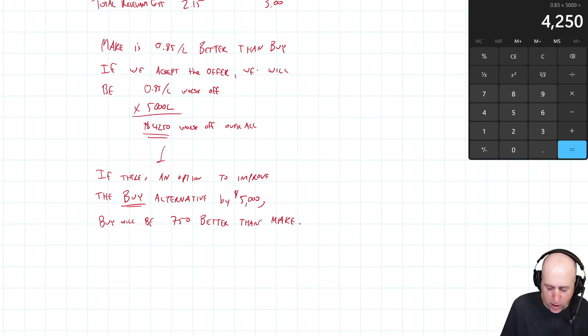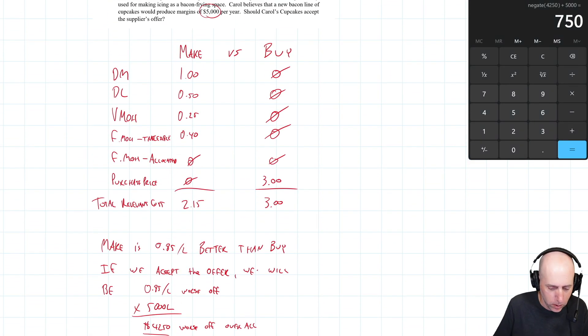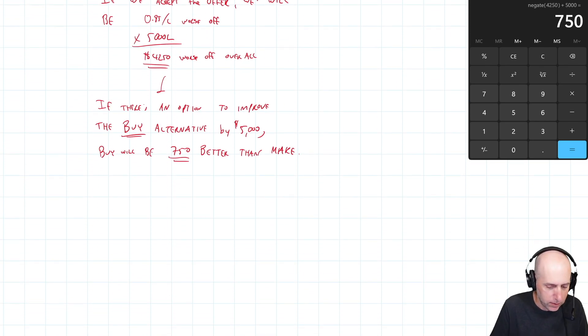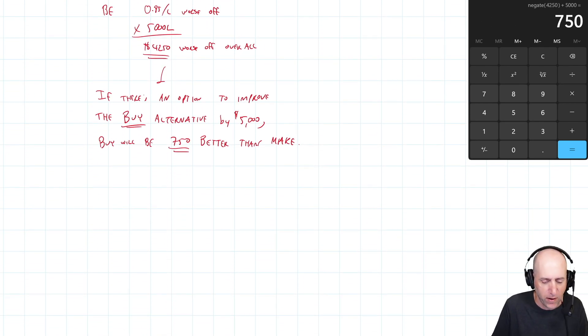And the math there I hope is straightforward. We said buy was $4,250 negative, right? Negative to our company. But we just came up with an option that improves the buy option by $5,000. Negative $4,250 plus $5,000 means we're $7,500 to the good side. So should Carol's cupcakes accept the offer? Yeah. If we think we can use the space and generate five grand. Yes, right. That's the answer. The company is going to be $7,500 better off.